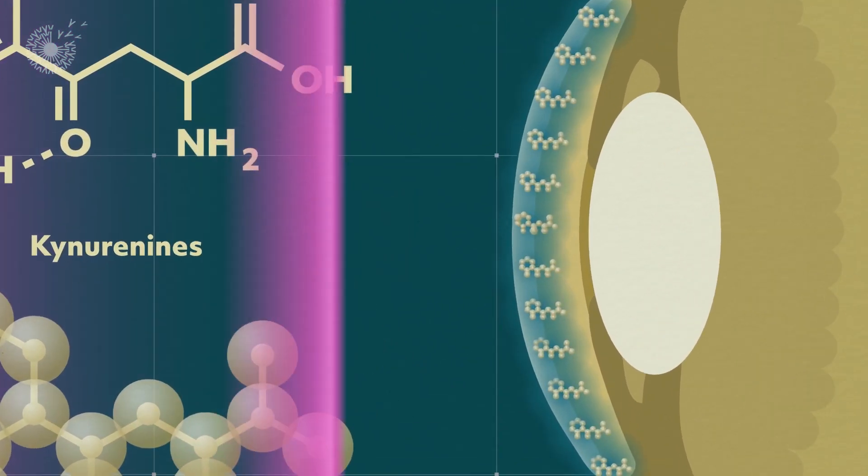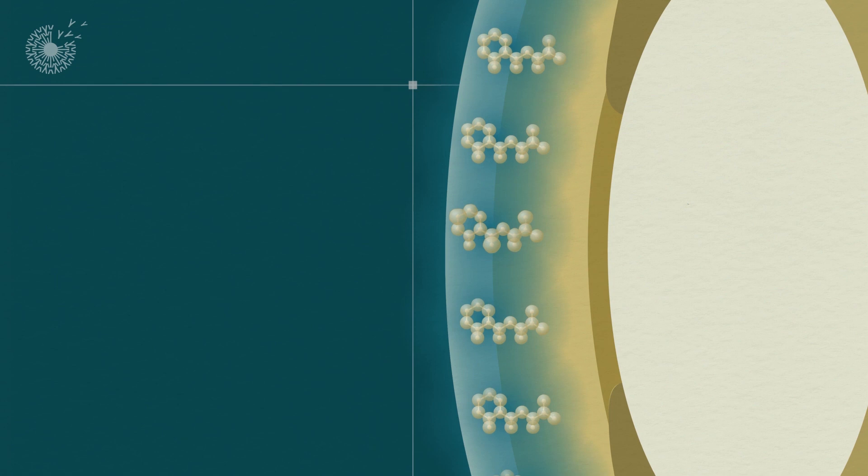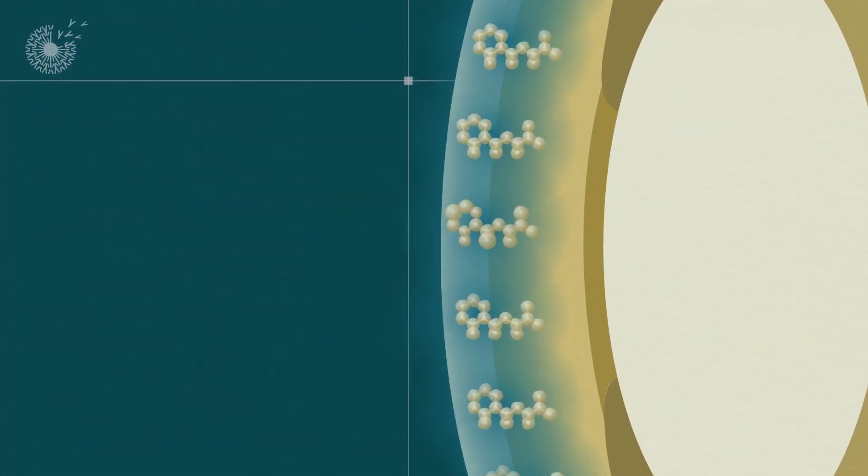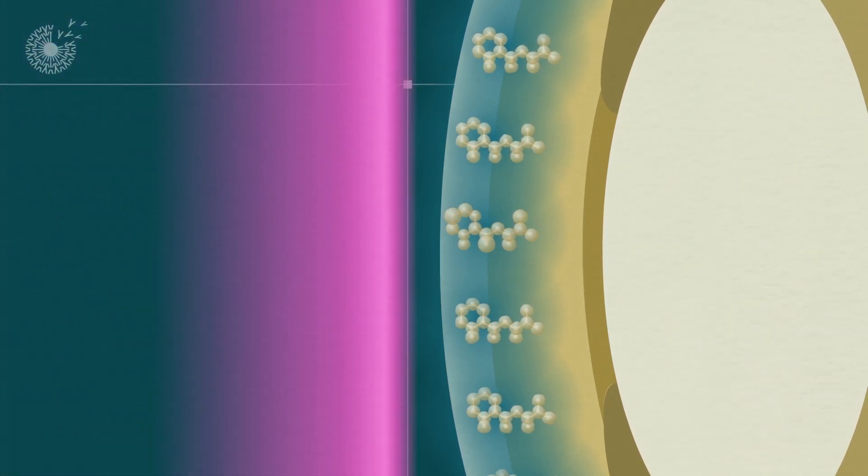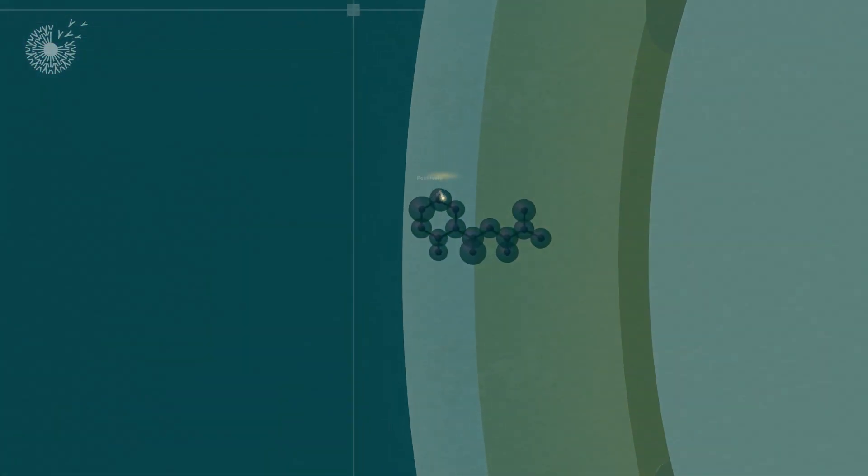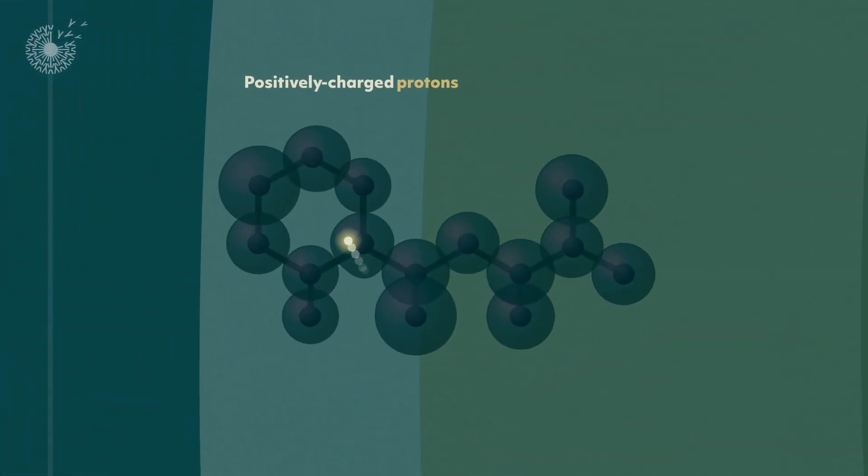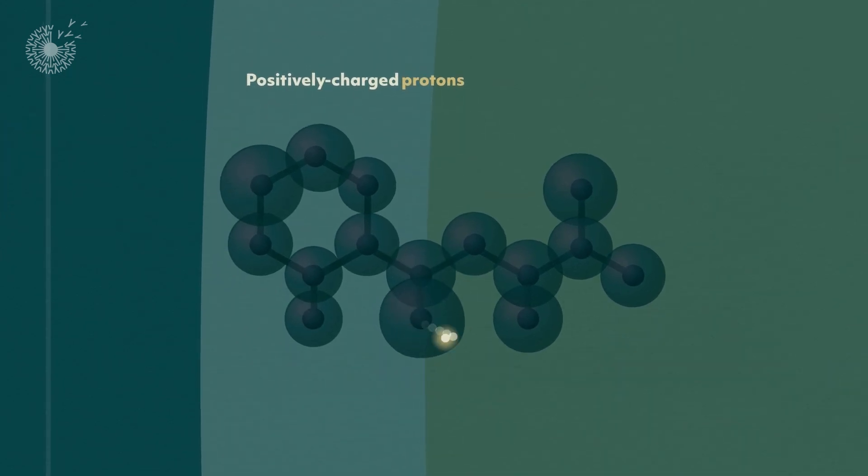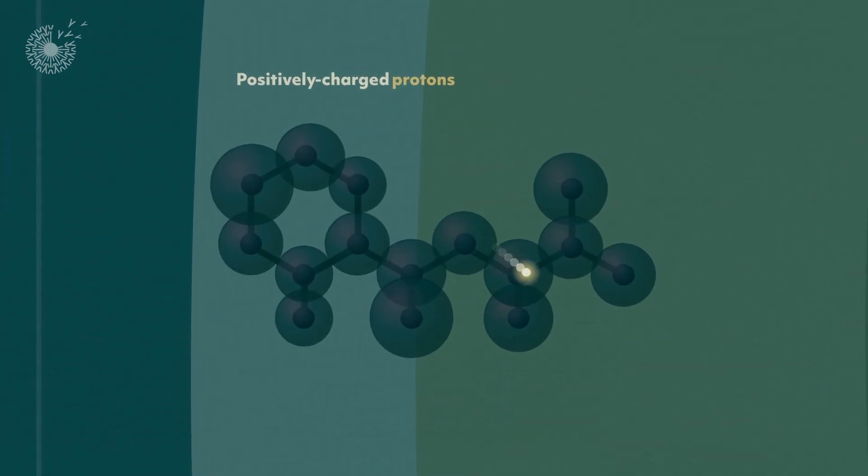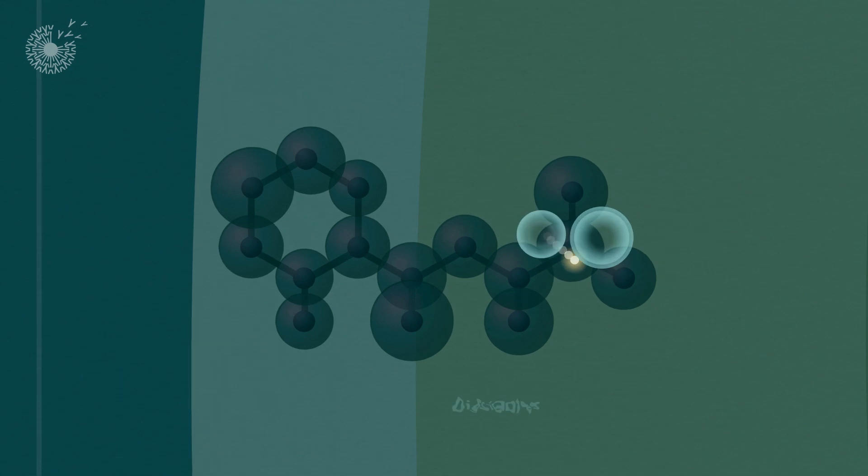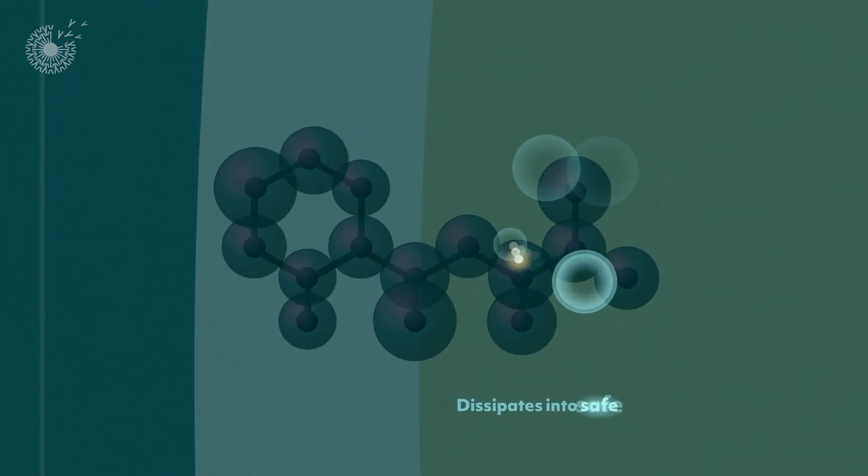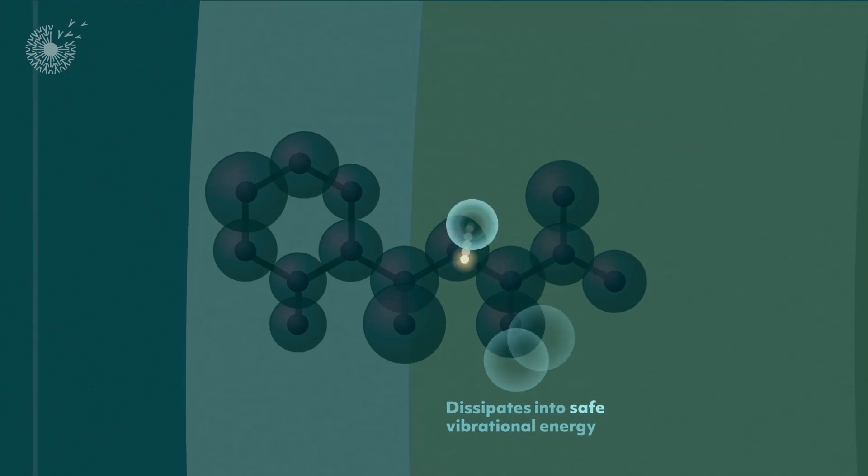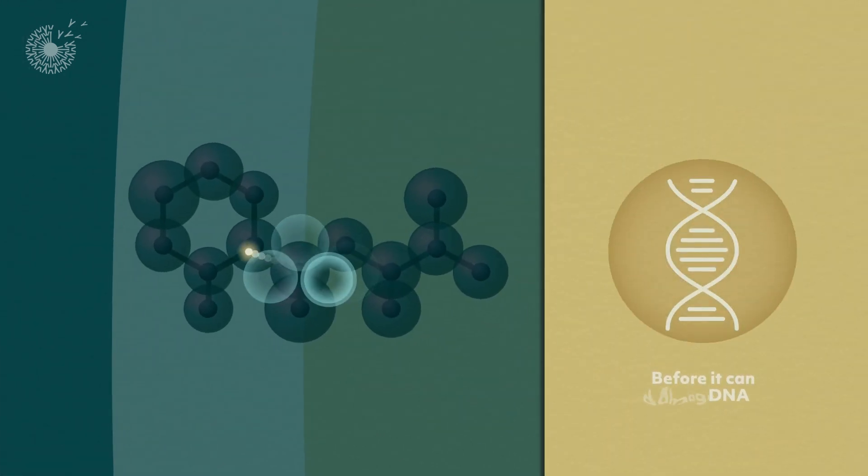As incoming photons of UV light hit kynuranine molecules, they spark changes that cause different parts of the molecule to swell with negative electrical charge. This causes positively charged protons to ricochet like billiard balls through the kynuranine's spindly molecular structure. This dissipates the potentially harmful UV radiation into safe vibrational energy before it can hit and damage DNA.